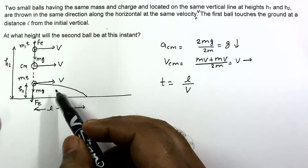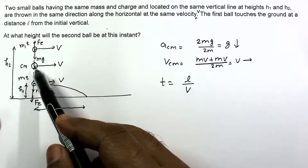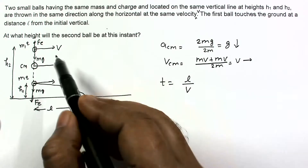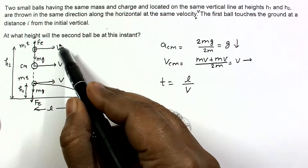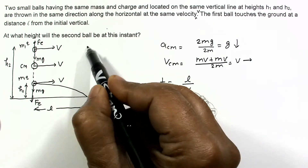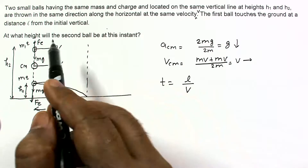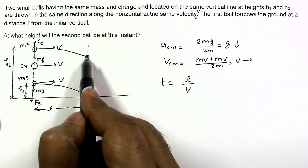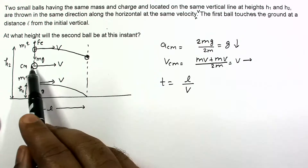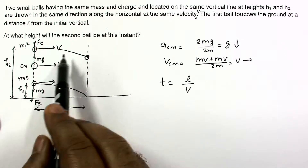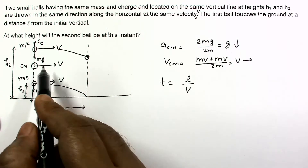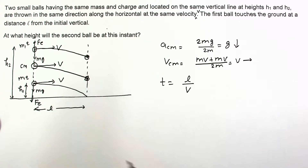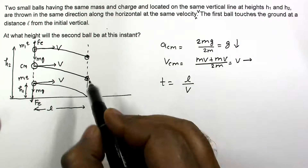Both balls remain on the same vertical line because the horizontal velocity of both remains constant. So the second ball is somewhere above, and the center of mass — moving with the same constant velocity v — is also somewhere between them.